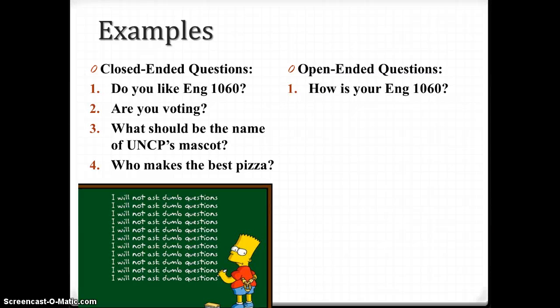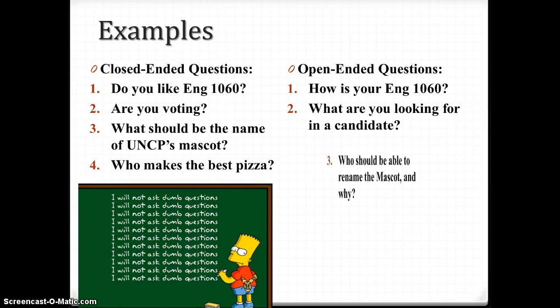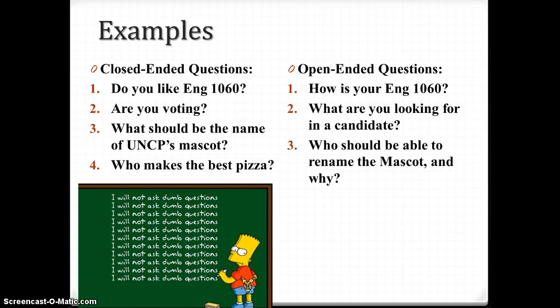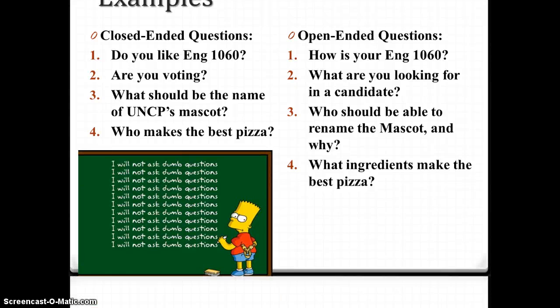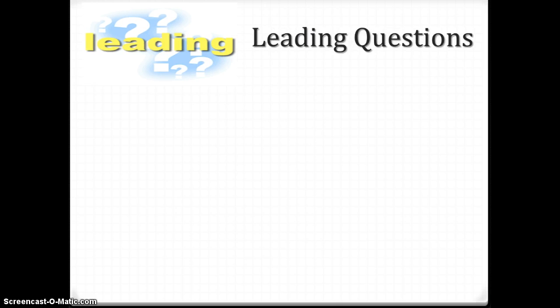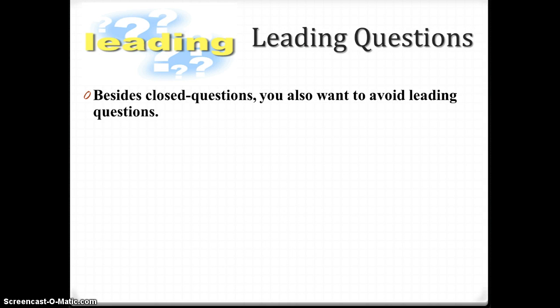So here's what you want to ask instead. How is English 1060? What are you looking for in a candidate who should be able to rename the mascot and why? What ingredients make the best pizza? Now you have a discussion. It's just about controlling your language, which is always a concern for us writers. You want questions that will lead to a really good, open-ended discussion.